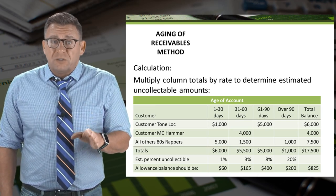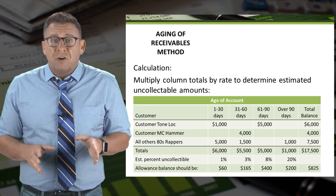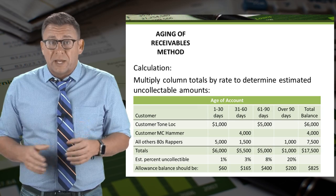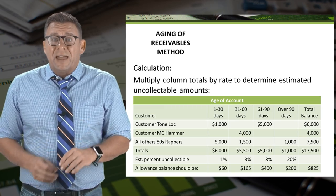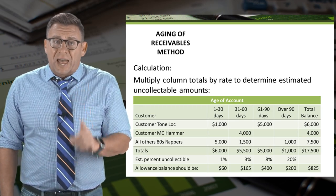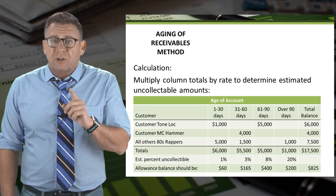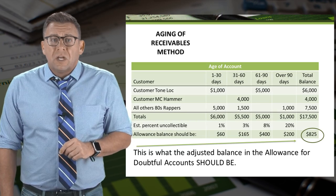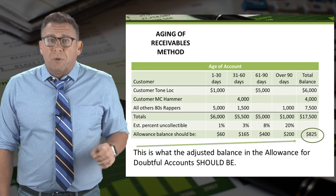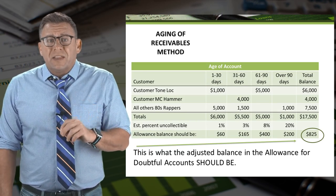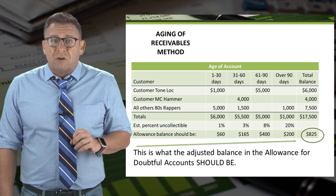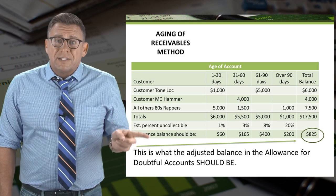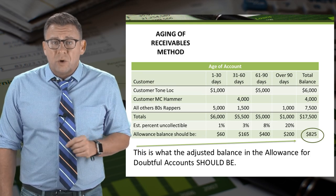The total of these becomes the amount of accounts receivable we think we won't collect, and that should be the balance in the allowance for doubtful accounts. So in this example, we think the balance in the allowance for doubtful accounts should be a credit of $825.